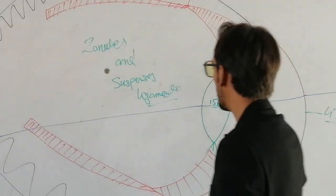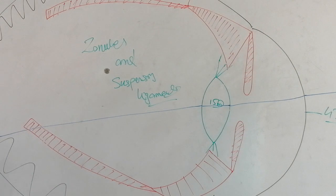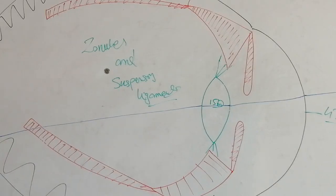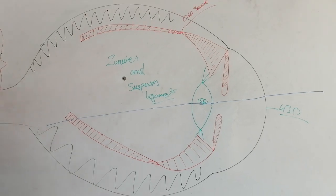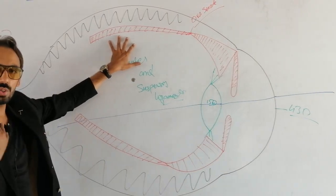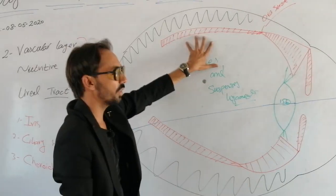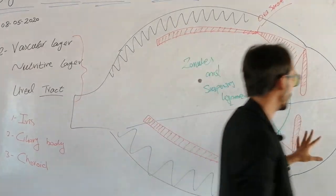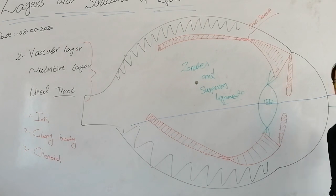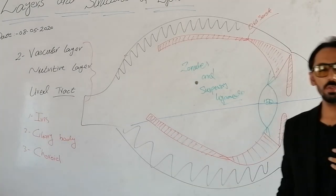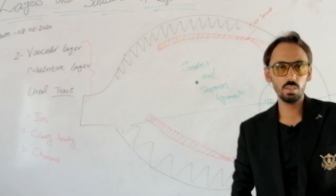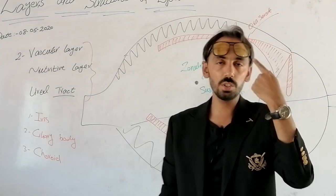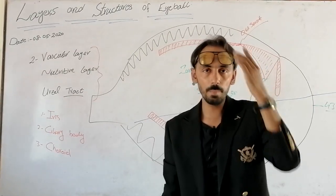So we have discussed the three structures of the uveal tract. Moving from posterior to anterior surface, the first structure is choroid, the second is ciliary body, and the last is iris. The iris is the structure which we can see with the naked eye — the roundish, colorful structure visible in the eye is called the iris.